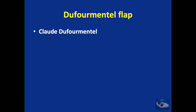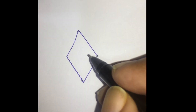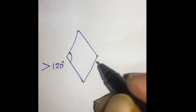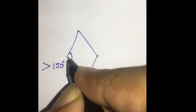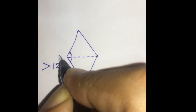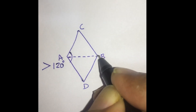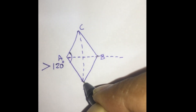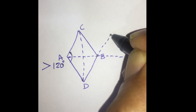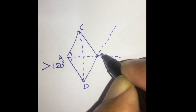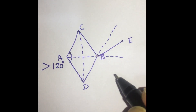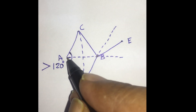The defermental flap is a modification of the Limburg flap where the angle is more than 120 degrees. When one of the angles of the rhomboid is more than 120 degrees, the defermental flap is planned. Here, the short diagonal is extended. The short diagonal here is AB and the other edges are C and D. The short diagonal AB is extended and the long diagonal CD is also marked. The side of the defect BD is also extended.